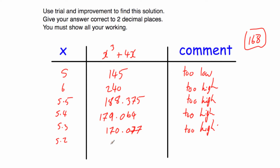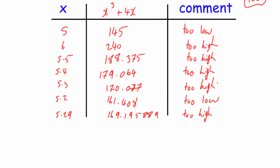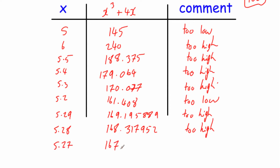Let's try 5.2: equals 161.408 — too low. So we're working to two decimal places. 170.077 was quite close to 168, so let's try 5.29: that gives 169.195889 — too high. Let's try 5.28: that gives 168.317952 — too high. Let's try 5.27: that equals 167.443183 — too low. So the answer is in between 5.27 and 5.28. Let's try the checker 5.275.